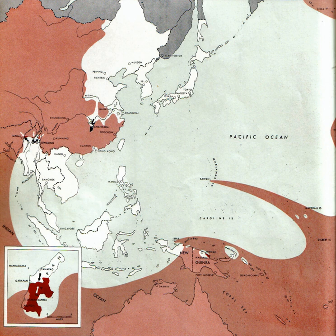Typhoon Cobra hits the third fleet of Admiral Halsey. Three destroyers capsize and almost 800 lives are lost. On the 18th, Bastogne, an important crossroads, is surrounded.